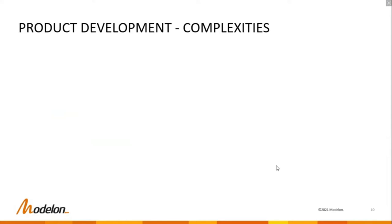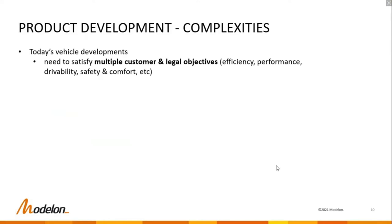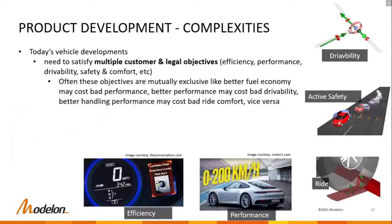A little about the complexities of today's product development. Today's vehicle development needs to satisfy multiple customer and legal objectives. For example, a customer would like to see the car's efficiency, performance, drivability, safety and comfort metrics. Often these objectives are mutually exclusive: better fuel economy may cost bad performance, better performance may cost bad drivability, better handling performance may cost bad ride comfort, and vice versa.